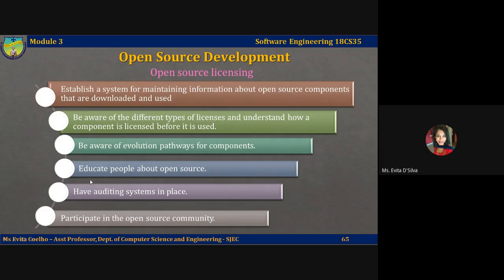Fourth, educate people about open source. It's not enough to have procedures in place to ensure compliance with licensing conditions — you should also educate developers about open source and open source licensing. Fifth, have an auditing system in place. Developers under tight deadlines might be tempted to break the terms of a license. If possible, you should have software in place to detect and stop such things, because otherwise you may face legal implications.